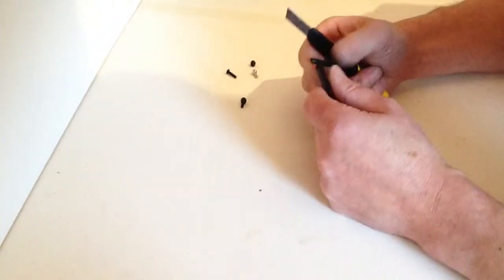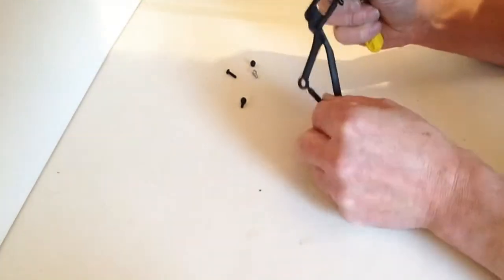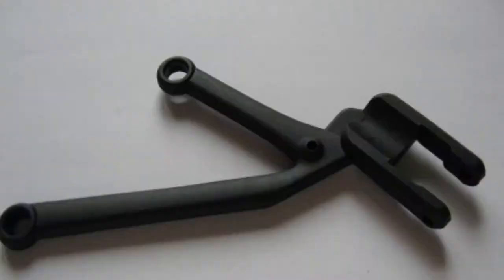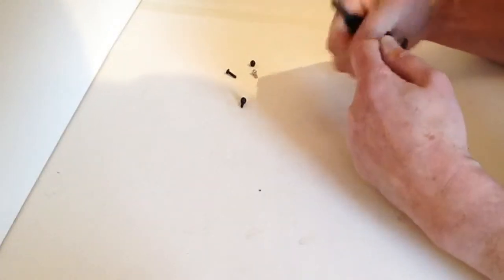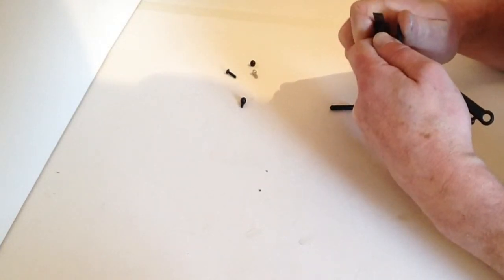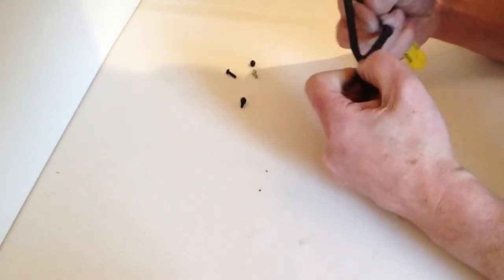Take your rear wishbone, provided in this stage, and remove the excess sprue mould here. Just gently thin that off. Just take off any excess plastic like so.